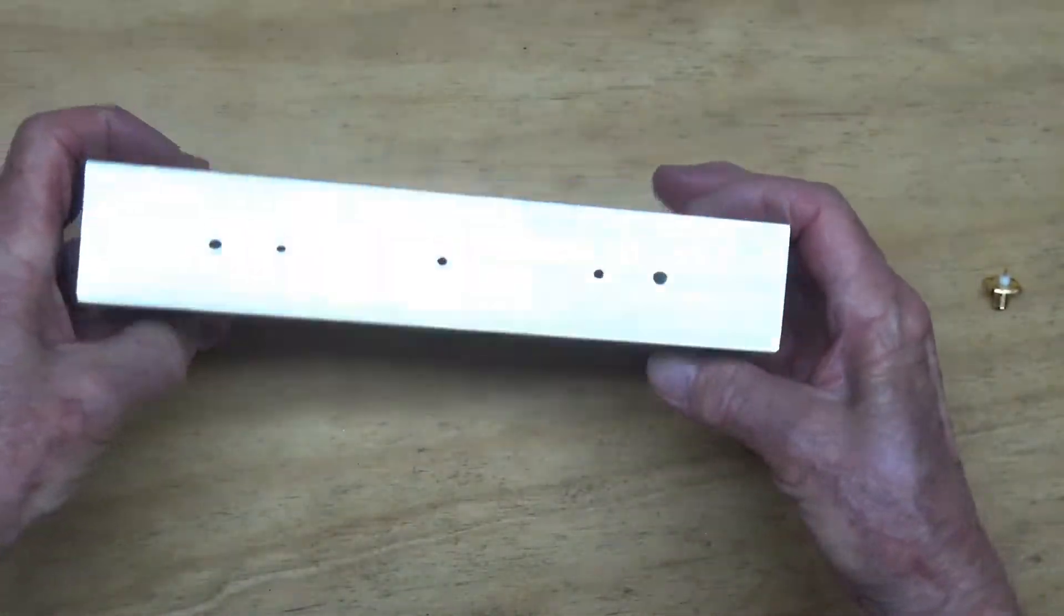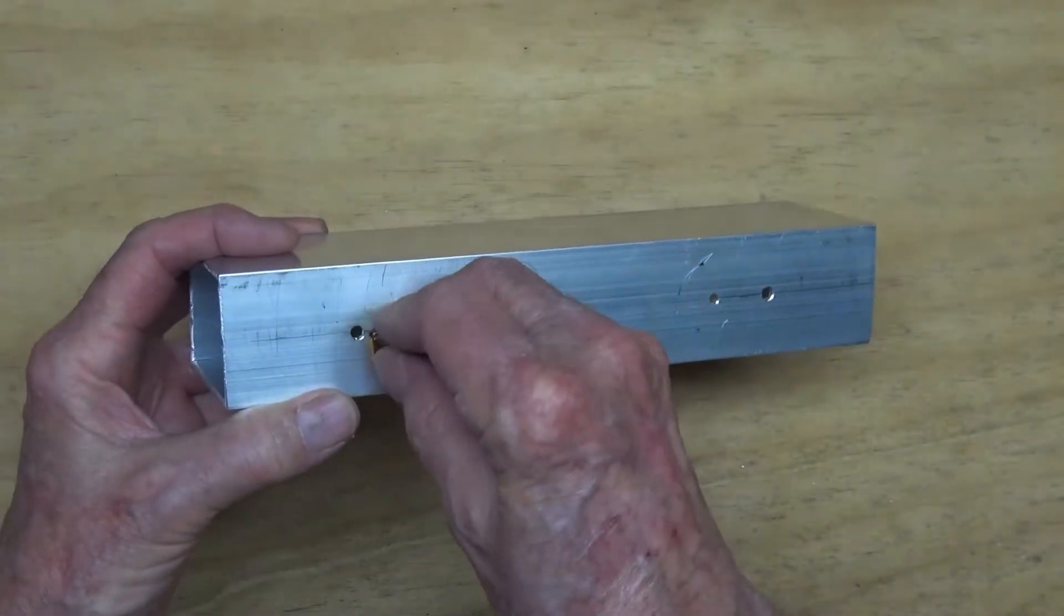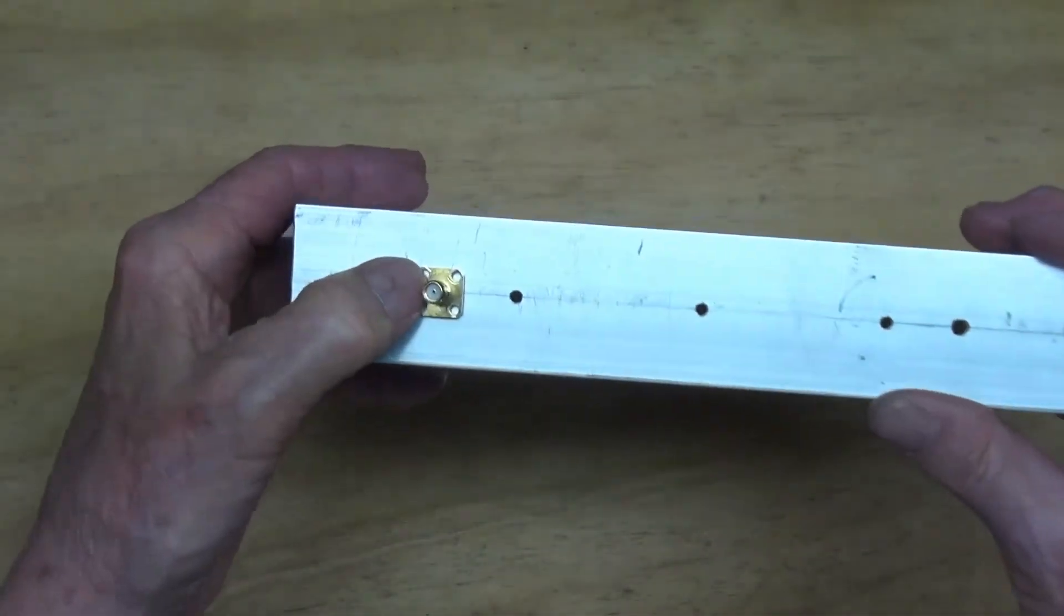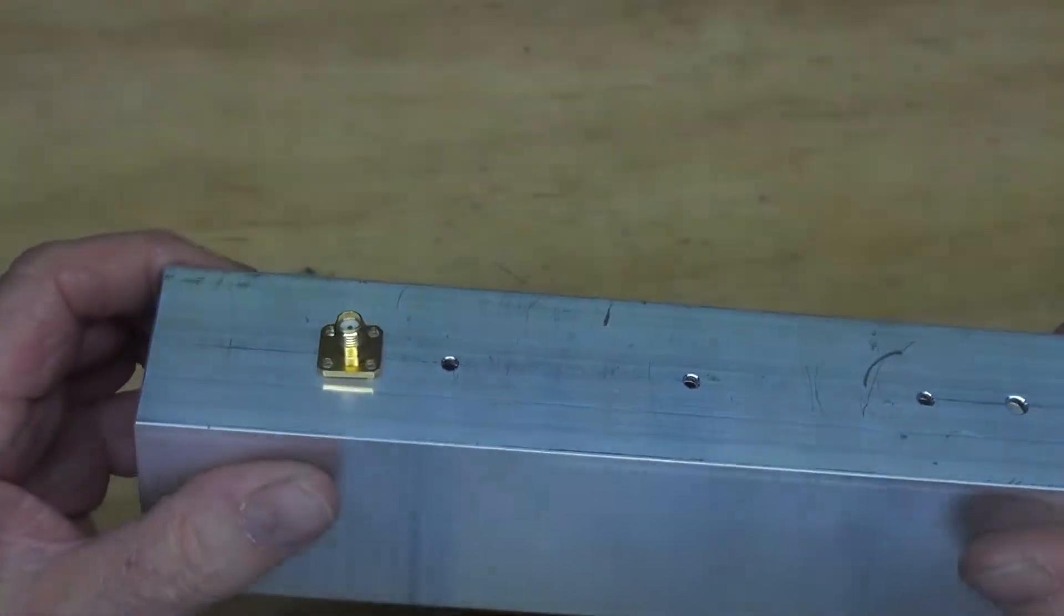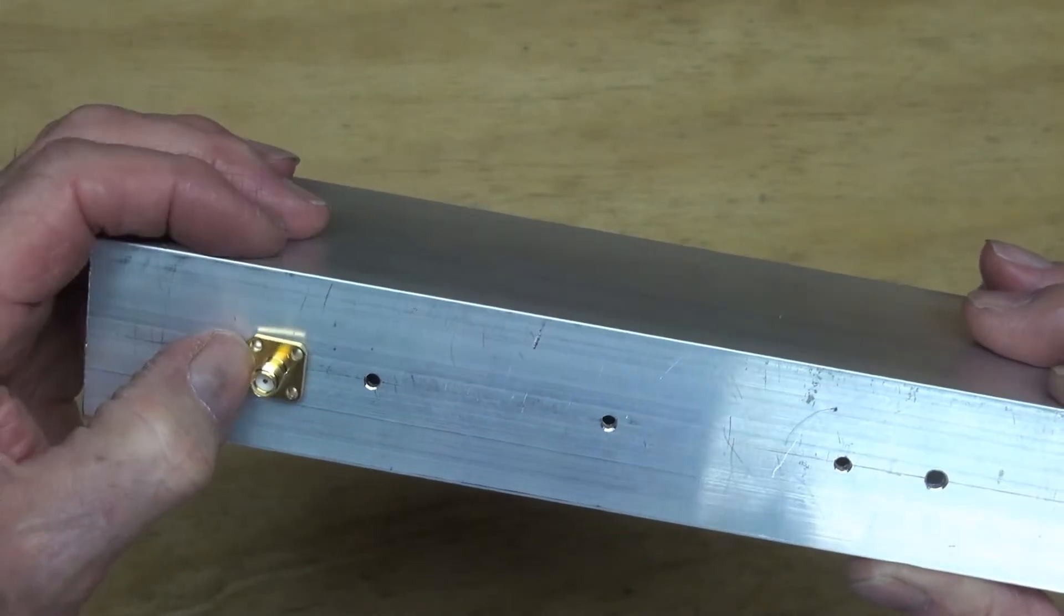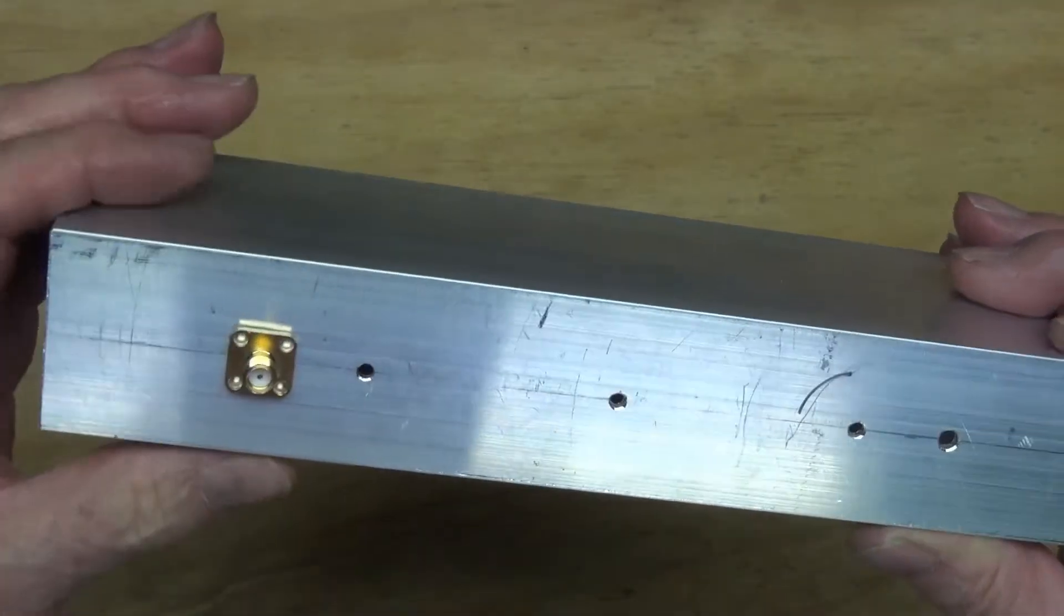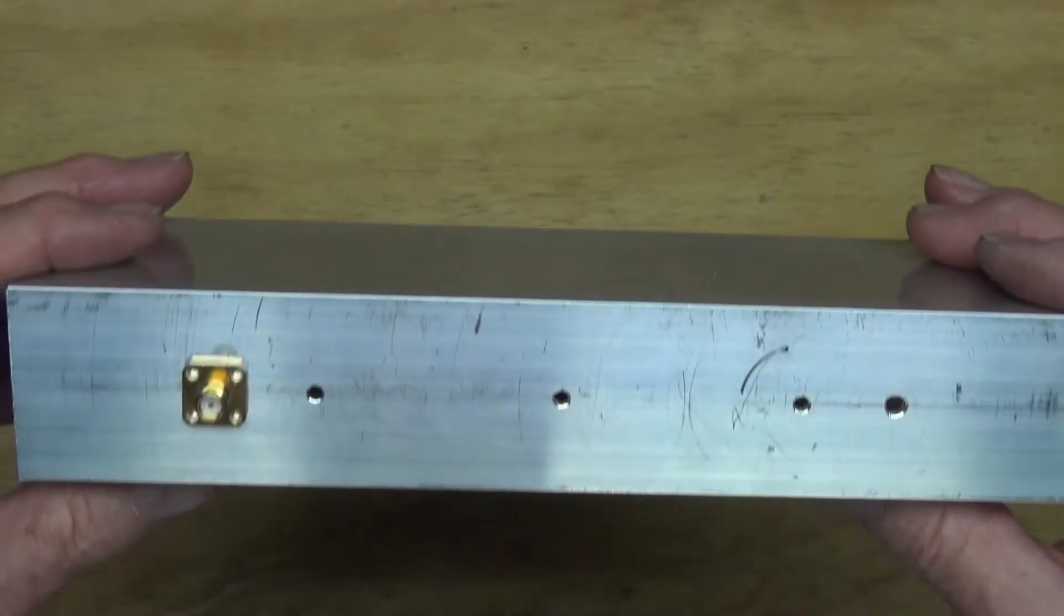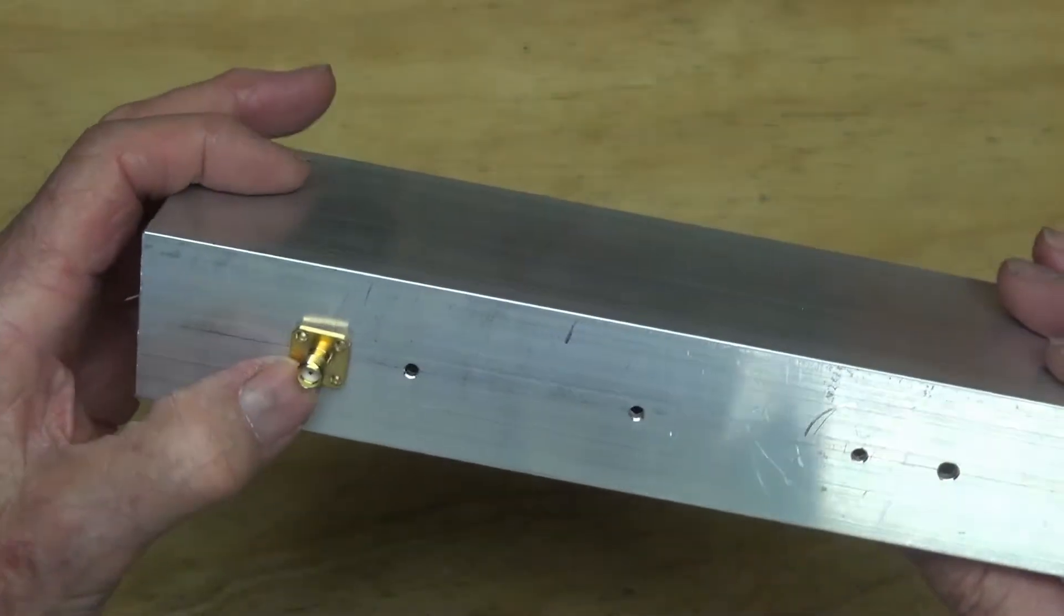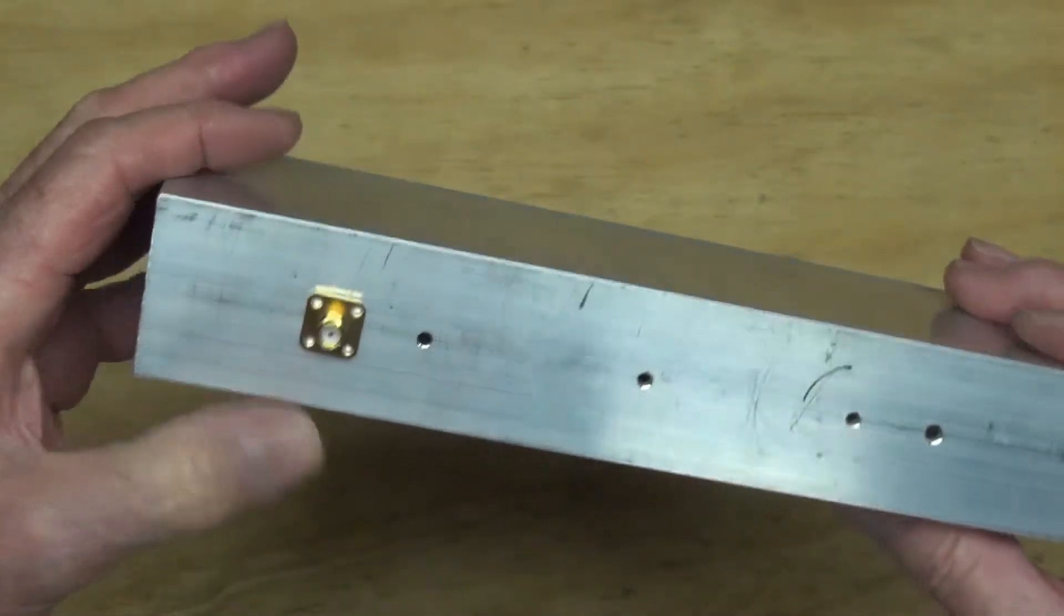The next step is to drill the mounting screws for the SMA connectors here. So, they're a 2.5mm hole. I highly recommend buying a set of metric drill bits, very useful for working on anything that comes out of China.